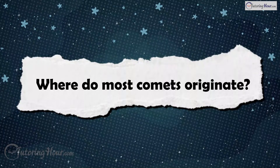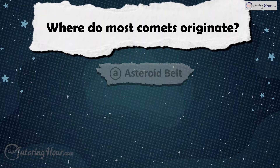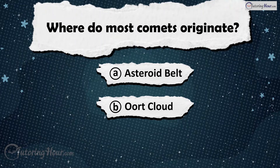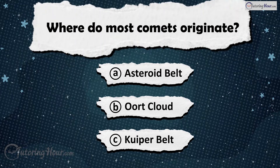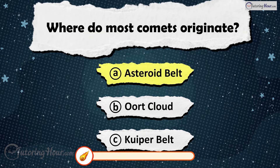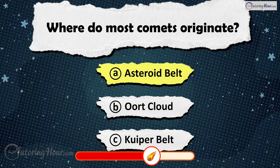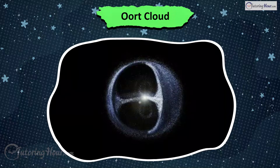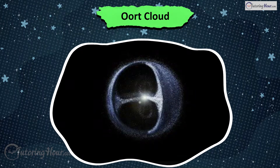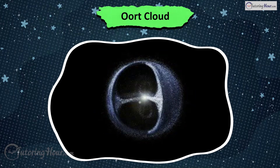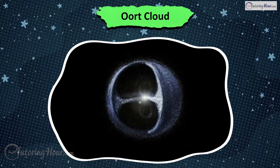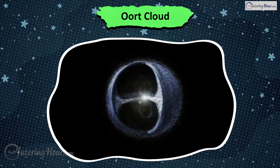Where do most comets originate? Is it A) Asteroid Belt, B) Oort Cloud, or C) Kuiper Belt? The answer is Oort Cloud. The Oort Cloud is a distant spherical region of icy bodies surrounding the solar system, the source of long-period comets.